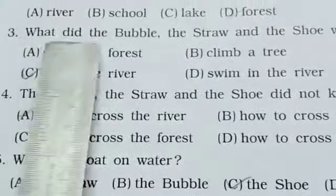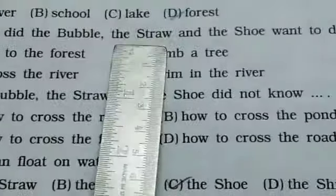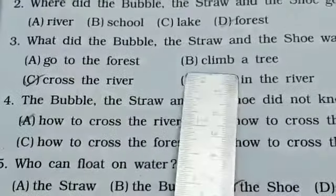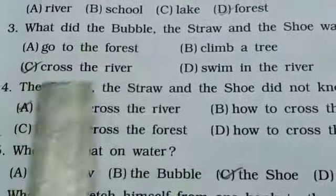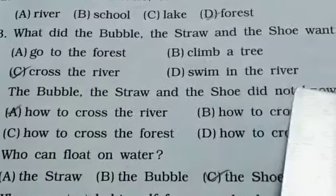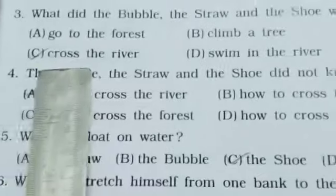Third. What did the bubble, the straw and the shoe want to do? A. Go to the forest, B. Climb a tree, C. Cross the river, D. Swim in the river. Correct answer, C, cross the river.